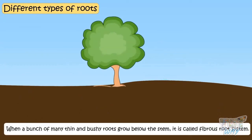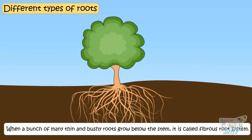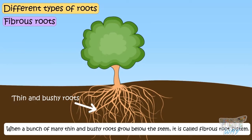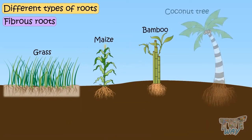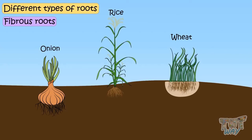When a bunch of many thin and bushy roots grow below the stem, it is called a fibrous root system. These thin and bushy roots are nearly equal in size. Grasses, maize, bamboo, coconut tree, onion, rice, and wheat are the plants that have fibrous roots.